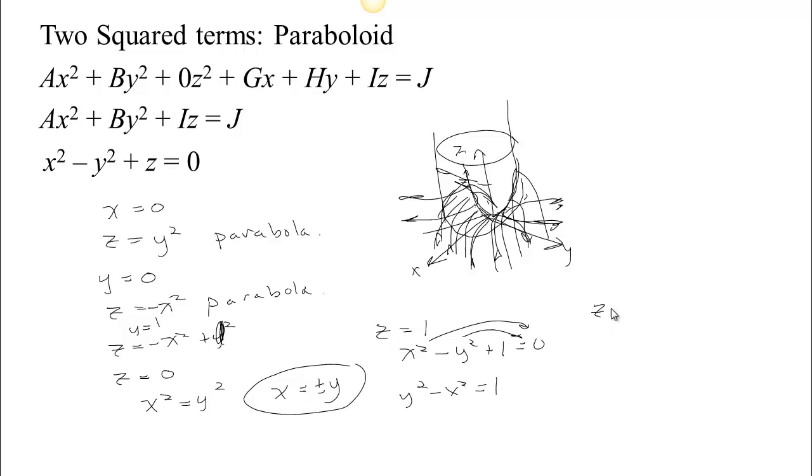Now if we set z = -1, then we have x² - y² - 1 = 0. That's another hyperbola. But this time, the hyperbolas are opening out in this direction. So there's one in the forward and one in the back that way.